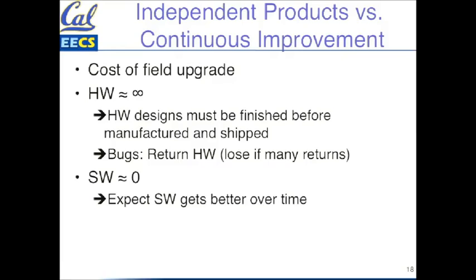The expectation is different for software — not only how well does it have to work in the beginning versus hardware, but also the culture that's grown up is that you expect the software to get better over time. That means you get rid of initial bugs, but it also means you expect enhancements over time. That's the culture that's grown up around software. If you get the first version of software and there are bugs in it, you're not surprised. I'll just wait for the next upgrade. Because of the differences in the two media and the cost of field upgrades, completely different cultures have grown up around software and hardware.